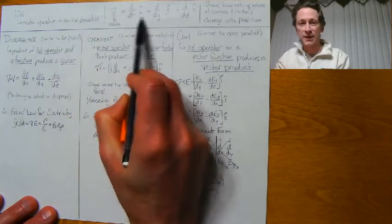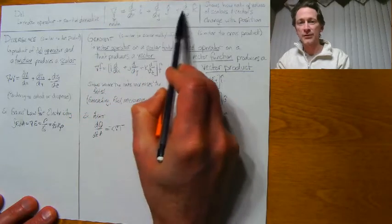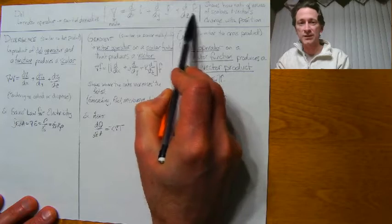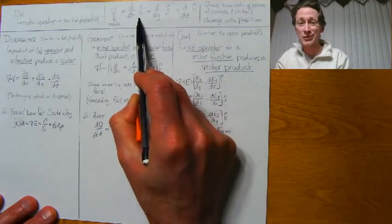You have the derivative in x, the derivative with respect to y, the derivative with respect to z, and then the unit vectors that match each of those: i, j, and k.